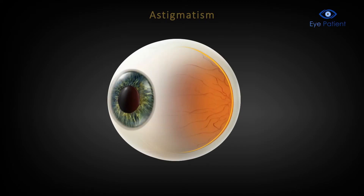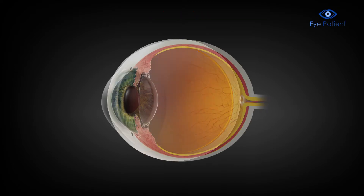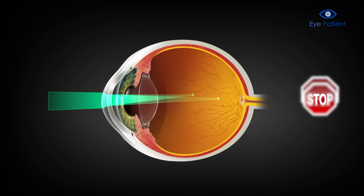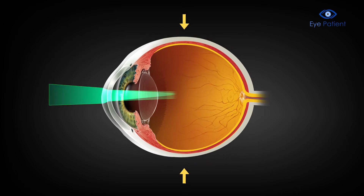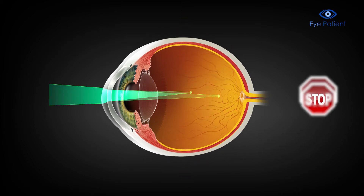Astigmatism is a condition where light is refracted or bent in one direction more than in another. Usually, the eye has the appearance of a perfectly round ball, but in the case of astigmatism, the eye is irregularly shaped like a football so that only a section of an object is in focus at a time.